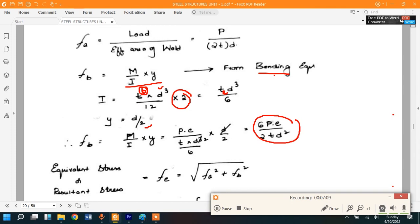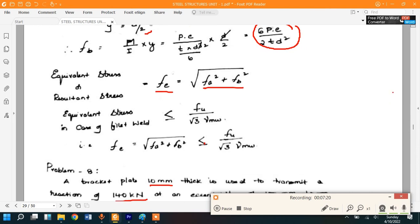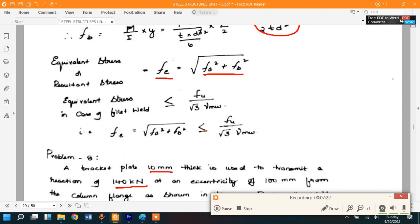So let us find out the resultant or the effective stress: root over F_A squared plus F_B squared. Now we have to check this condition. What is that? So see here, F_U by root 3 gamma M_W is nothing but strength of weld. And this effective stress is nothing but this F_E. So F_E is the stress that is coming onto this weld because of load P. The weld develops the stresses because of load P.